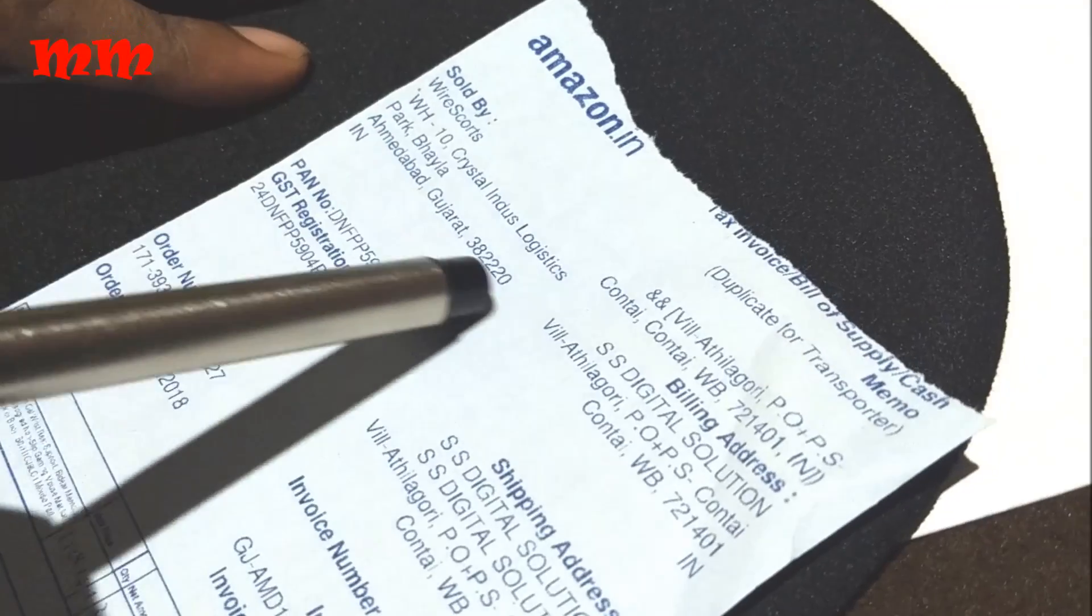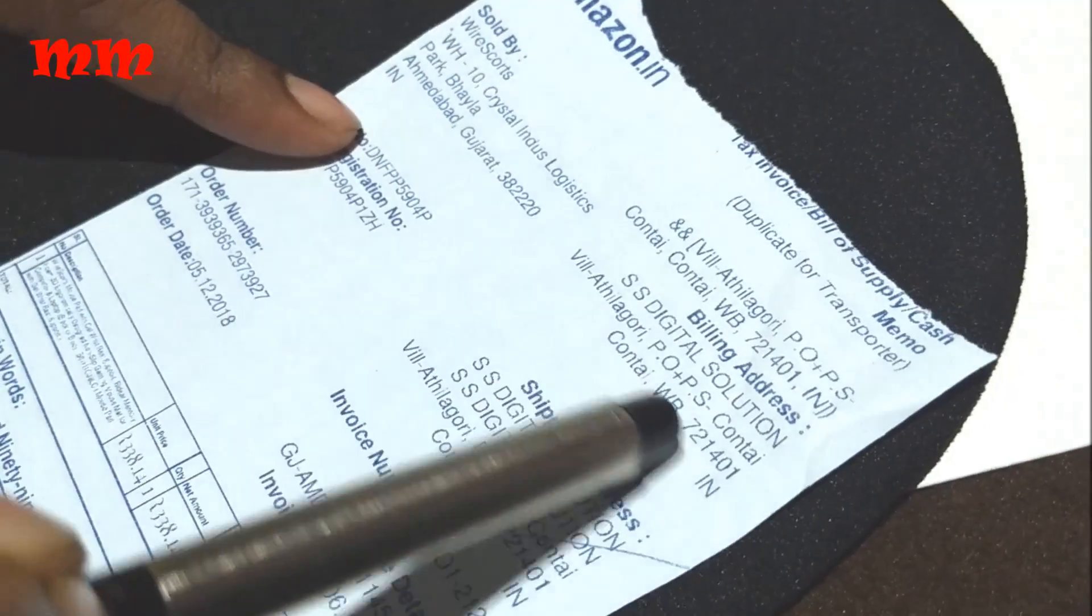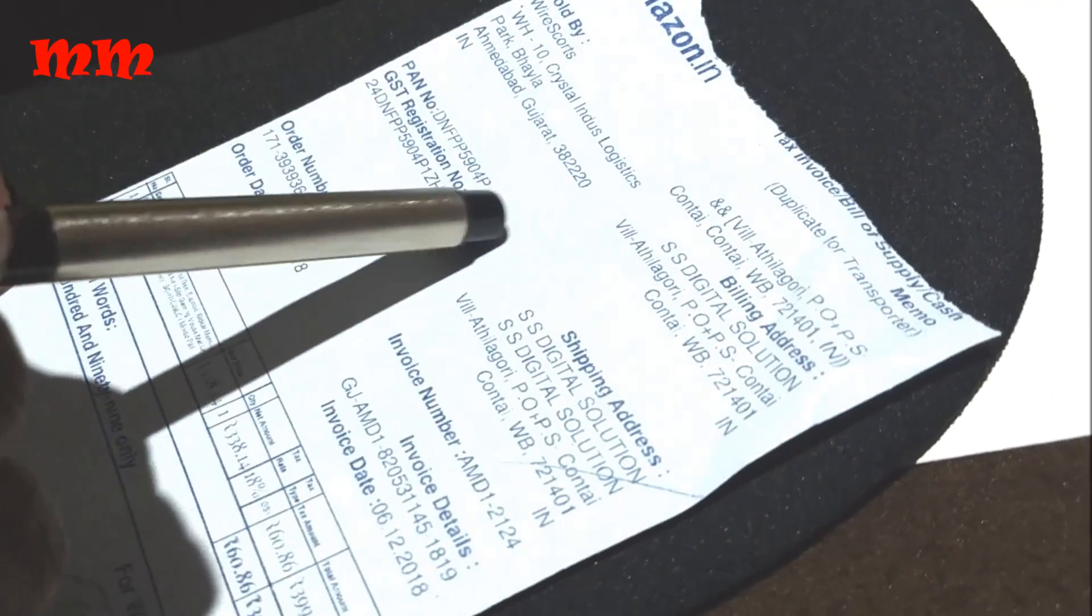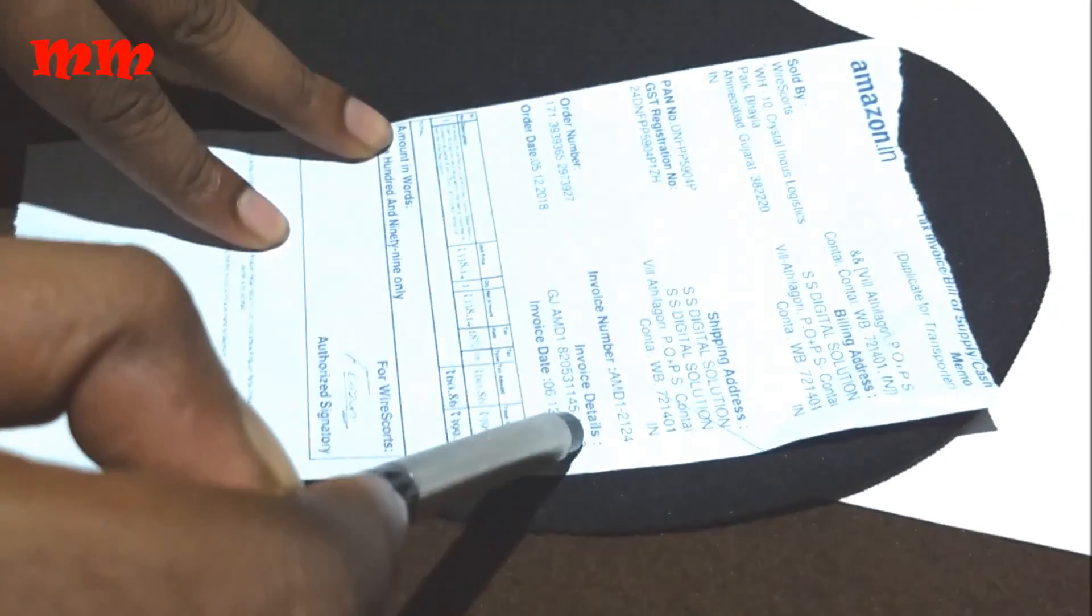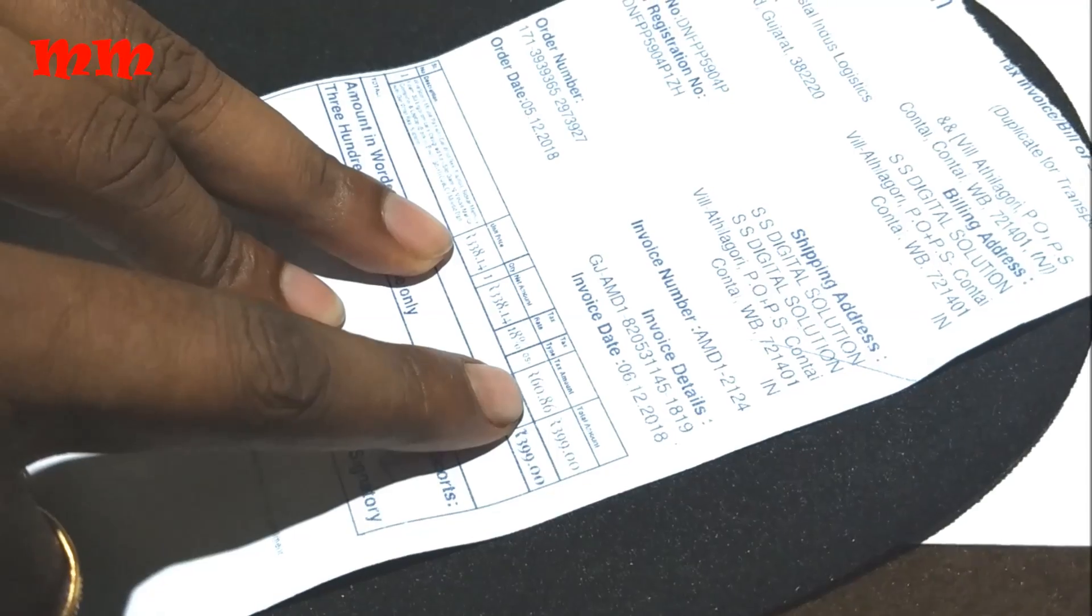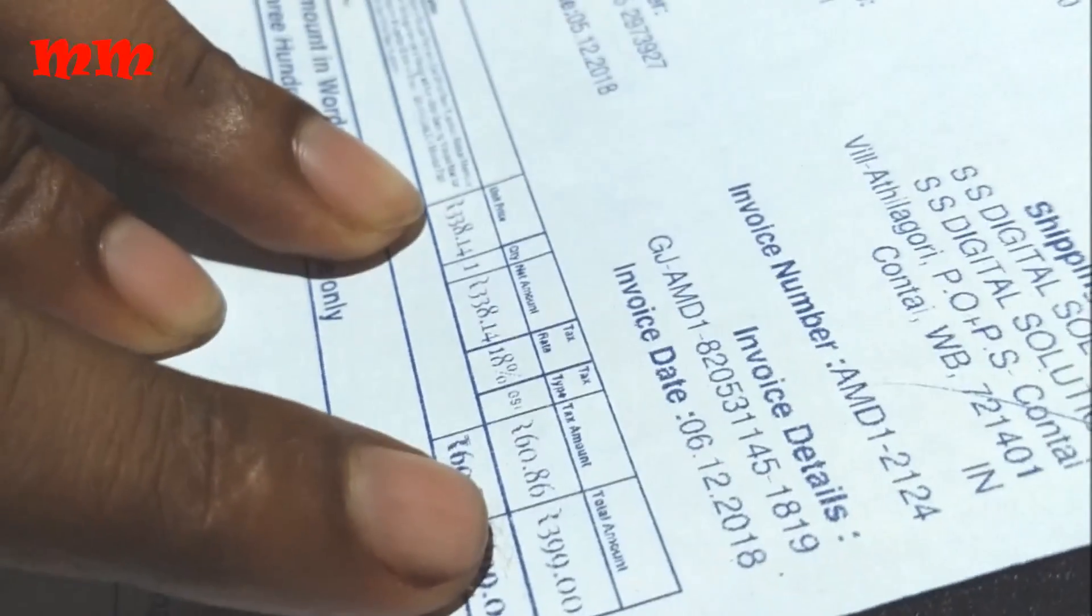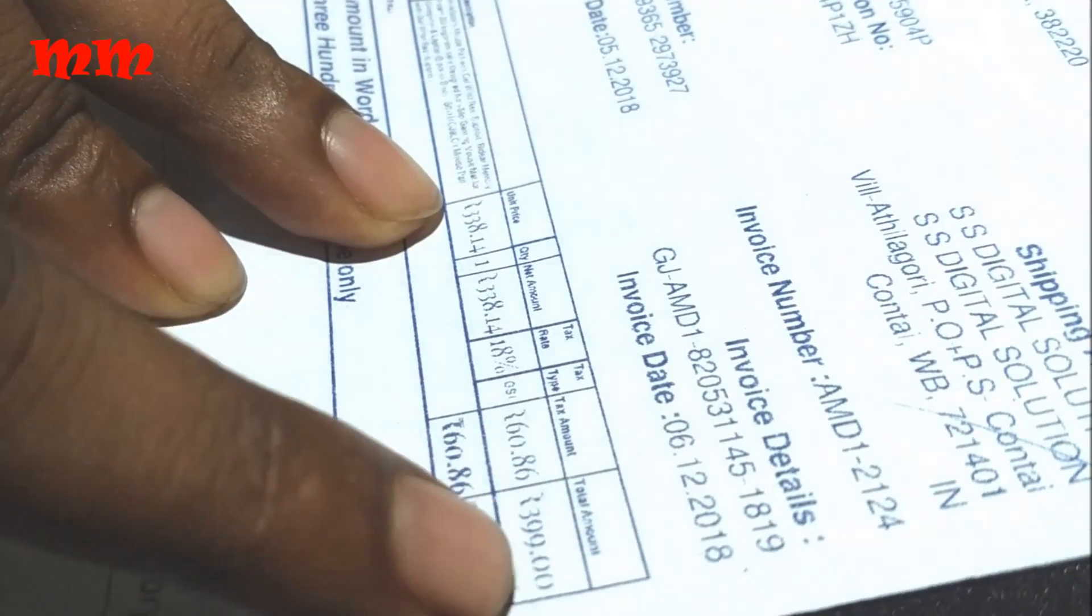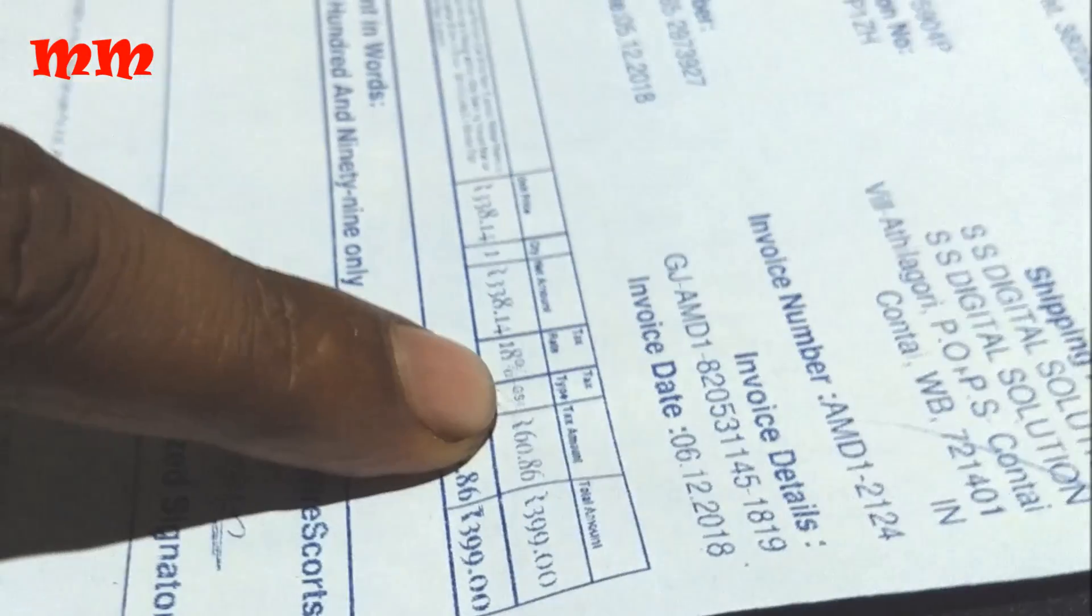See the Crystal India Logistics of Ahmedabad, Gujarat. Here is the shipping address and billing address - shipping address is the same as billing address. Here is the invoice number and details. The price is also here, the total price 399.00 in Indian currency.